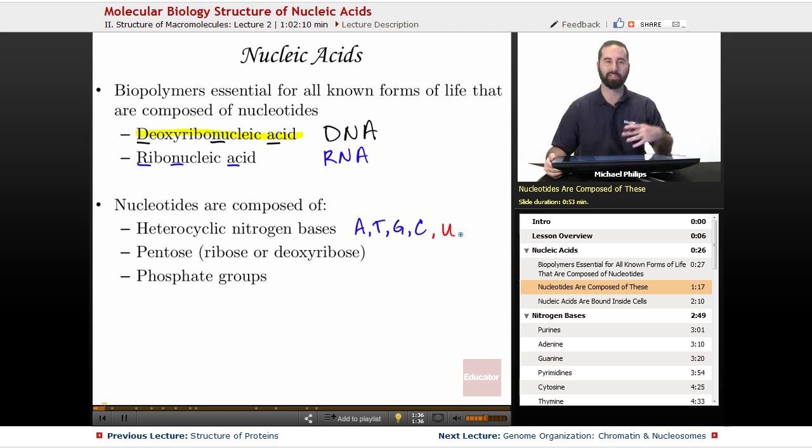Now nucleotides also have pentoses, so those are the ribose or deoxyribose. The ribose would be for ribonucleic acid, RNA, and the deoxyribose is for deoxyribonucleic acid, DNA.